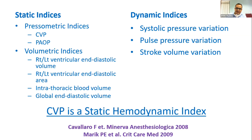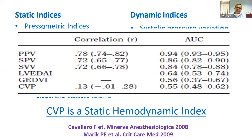CVP is a static hemodynamic index and is not a good indicator of fluid status. PPV, SPV, and SVV have very high correlation with volume status and can define whether a patient has fluid deficit or not. These can appear as short notes or exam questions on static versus dynamic indices for assessing volume status.